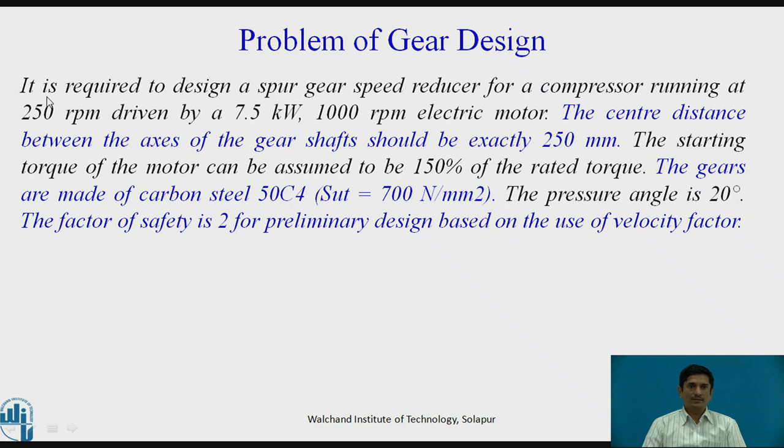The problem given is: it is required to design a spur gear speed reducer for a compressor. The application is compressor, running at 250 rpm driven by a 7.5 kW 1000 rpm electric motor. That means the driver element is motor, driven is a compressor. Power required is 7.5 kW which is to be transmitted by the gear train. The centre distance between the axis of the gear shaft should be exactly 250 mm. The starting torque of the motor can be assumed to be 150% of the rated torque.